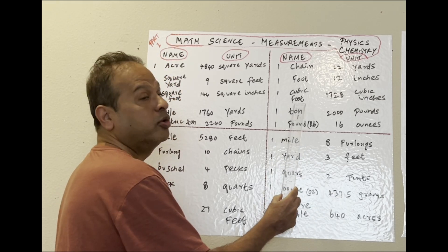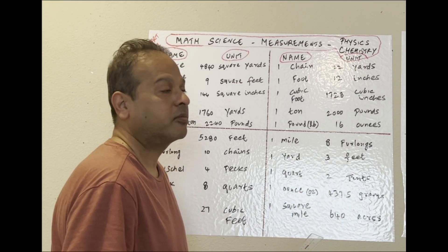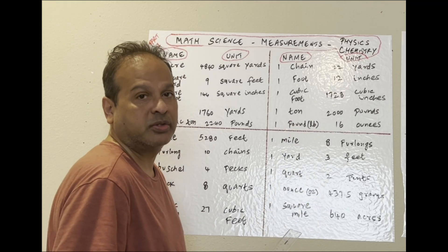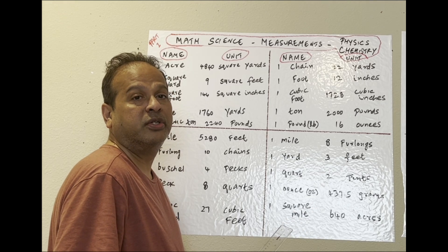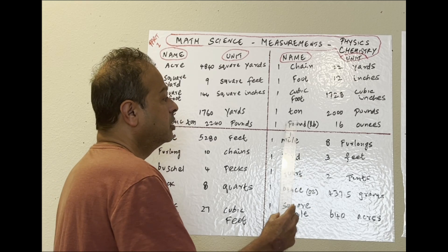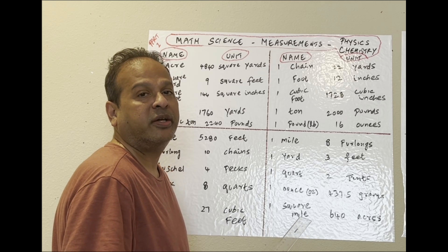One cubic foot: 1,728 cubic inches. One ton: 2,000 pounds. That's for again heavy goods, medium-sized goods that are used in the containers of cargo ships. One pound is 16 ounces. That's everyday life.